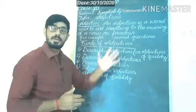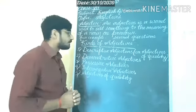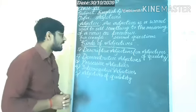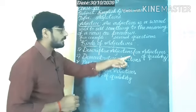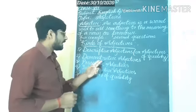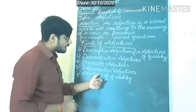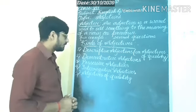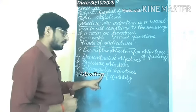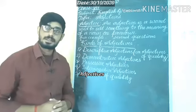In this class we will only discuss these kinds of adjectives. First, descriptive adjectives, which we know as adjectives of quality. Second, demonstrative adjectives. Third, possessive adjectives. Fourth, interrogative adjectives. And the last one is adjectives of quantity. We are going to discuss these one by one.